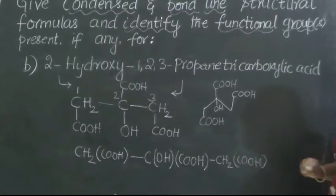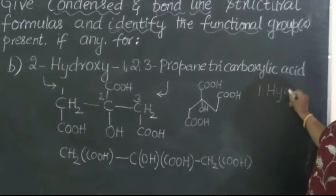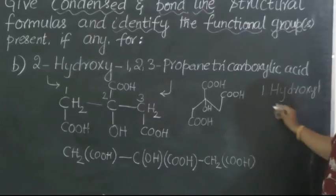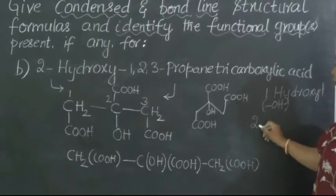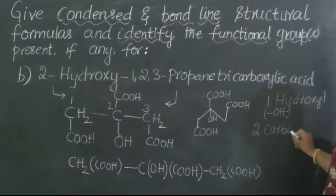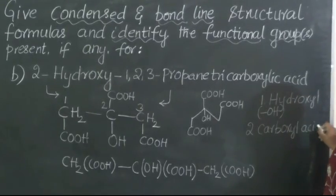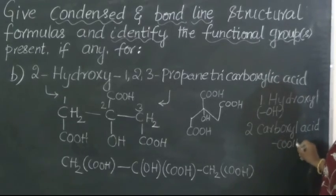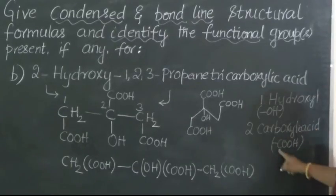Then, what are all the functional groups we see here? One is the hydroxyl group which is present as OH. The second functional group we see is the carboxylic acid. So this compound is containing two functional groups: one is the hydroxyl group, the other one is the carboxylic acid, COOH.